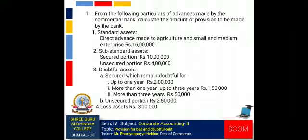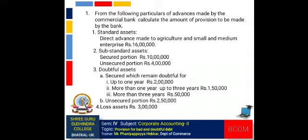Third, doubtful assets — (A) secured which remain doubtful for: (i) up to 1 year, Rs. 2 lakh; (ii) more than 1 year up to 3 years, Rs. 1 lakh 50,000; (iii) more than 3 years, Rs. 50,000. (B) unsecured portion: Rs. 2 lakh 50,000. Fourth, loss assets: Rs. 3 lakh.